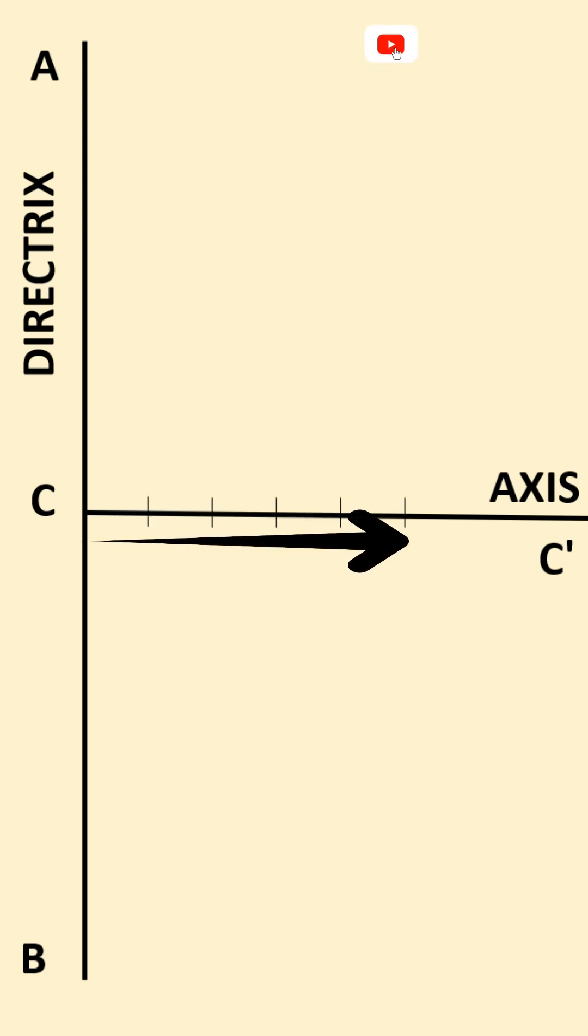Divide it into 3 plus 2, which equals 5 equal segments. Then on this you mark point V, which is two divisions from C or three divisions from F. This will serve as the vertex of the hyperbola.